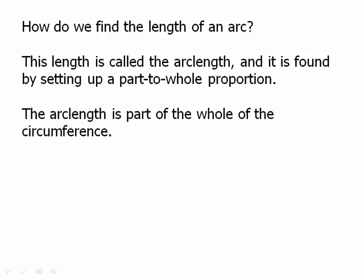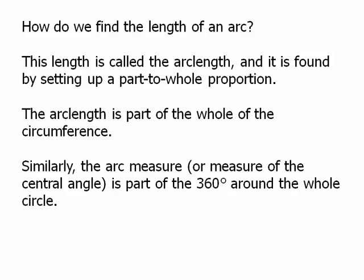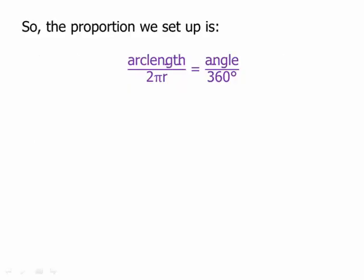The arc length is part of the circumference, so you compare the arc to the circumference — that's the part to the whole on one side of the equation. Similarly, the arc measure, or the measure of the central angle (those two are interchangeable), is the part of 360 degrees — all the way around the circle. So the proportion we set up is: arc length over 2πr equals angle over 360.